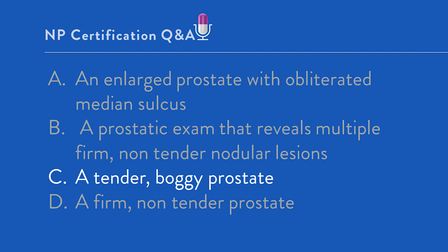Back to the question: a 67-year-old man diagnosed with acute bacterial prostatitis presents with a one-week history of constant perineal pain, arthralgia, irritated voiding symptoms, and intermittent fever. Which of the following is most consistent with the anticipated findings on prostatic digital rectal exam? Option A — an enlarged prostate with an obliterated median sulcus — is incorrect. This reflects the findings usually noted on DRE in benign prostatic hyperplasia, a really common condition in men of this age.